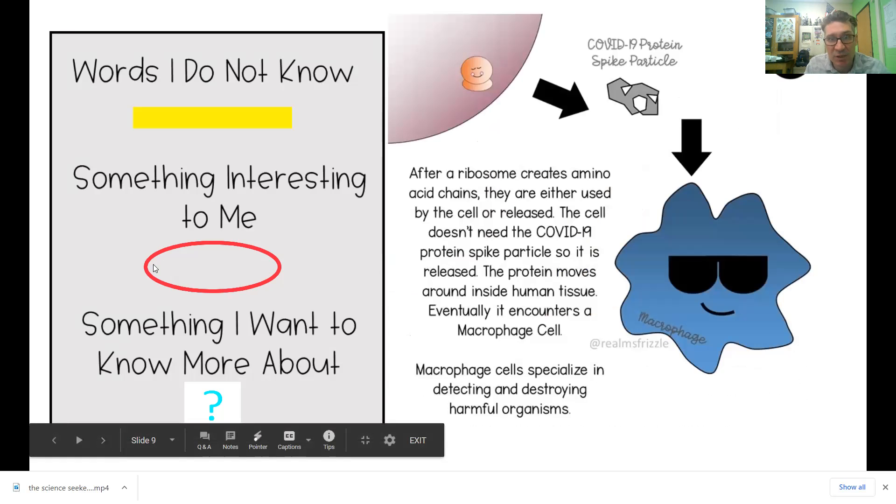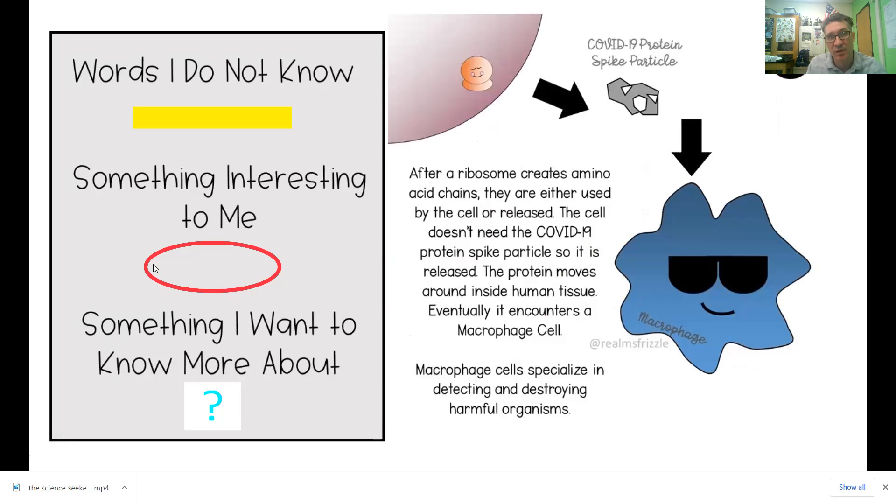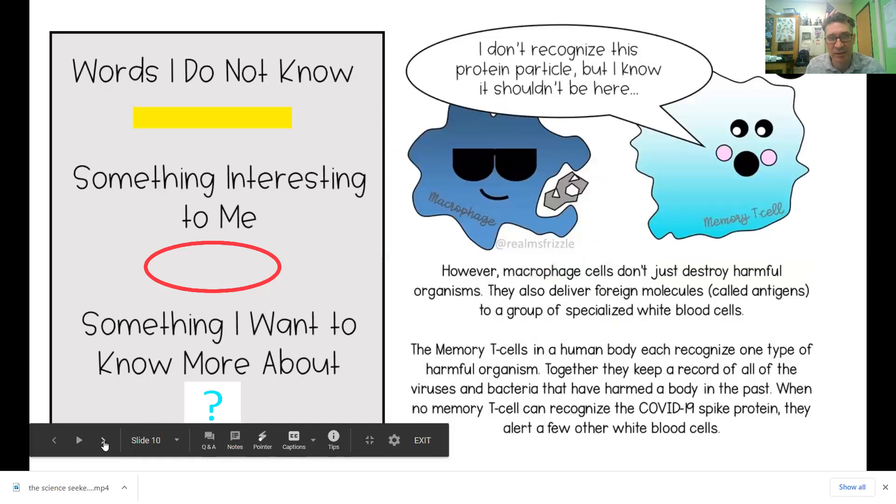After the ribosomes create amino acid chains, they are used by the cell or released. The cell doesn't need the COVID-19 protein spike particle, so it is released. The protein moves around inside human tissues, and eventually it enters what we call a macrophage cell. They like to eat stuff. Macrophages specialize in detecting and destroying harmful organisms in your body.